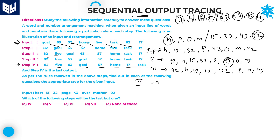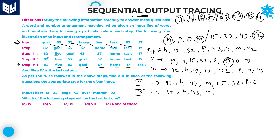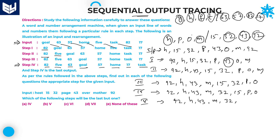In step 3: 92, H, 43. After 43, the second letter in English alphabetical order among the remaining letters is M. So M comes to this position and remaining as per the order: 15, 32, P, O. In step 4: 92, H, 43, M. After that, the third highest number is 32. Remaining: 15, P, O. In step 5: 92, H, 43, M, 32. After 32, the next word starts with O. Then 15 and P. This is the final step.